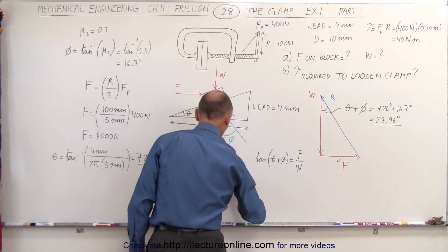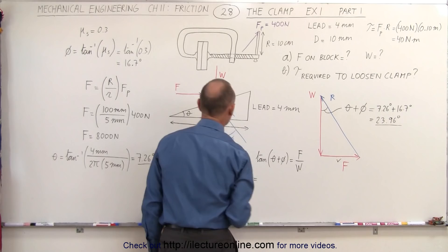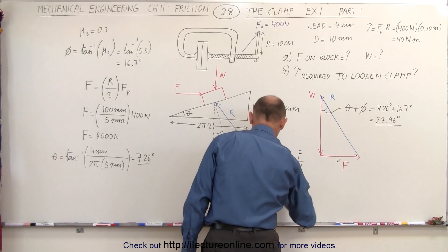And since we're looking for w, we can say that w is equal to f divided by the tangent of the sum of the two angles, which is 23.96 degrees. And f is a known quantity. That's 8,000 newtons.